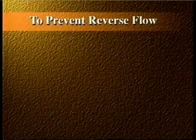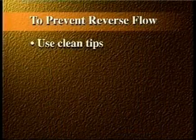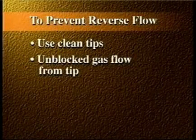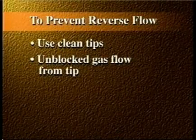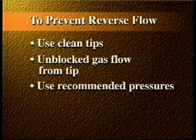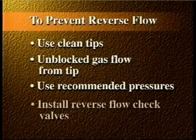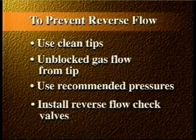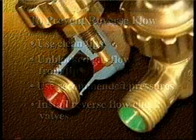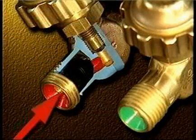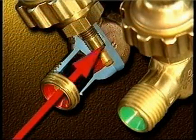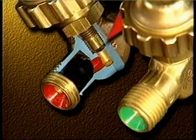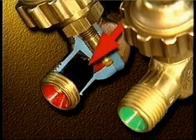Reverse flow can be prevented by using clean tips, making sure that the flow of gases from the tip is not blocked, using recommended pressures, and installing reverse flow check valves. The reverse flow check valve is a safety device designed to allow gas to flow in only one direction, from the regulator to the torch.